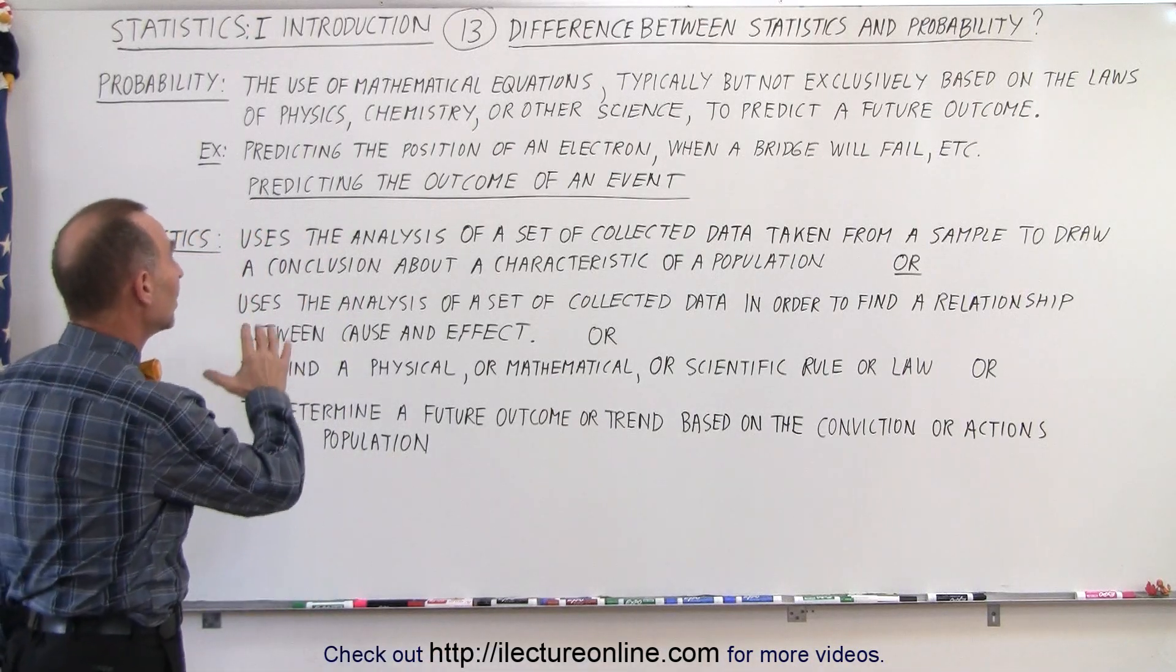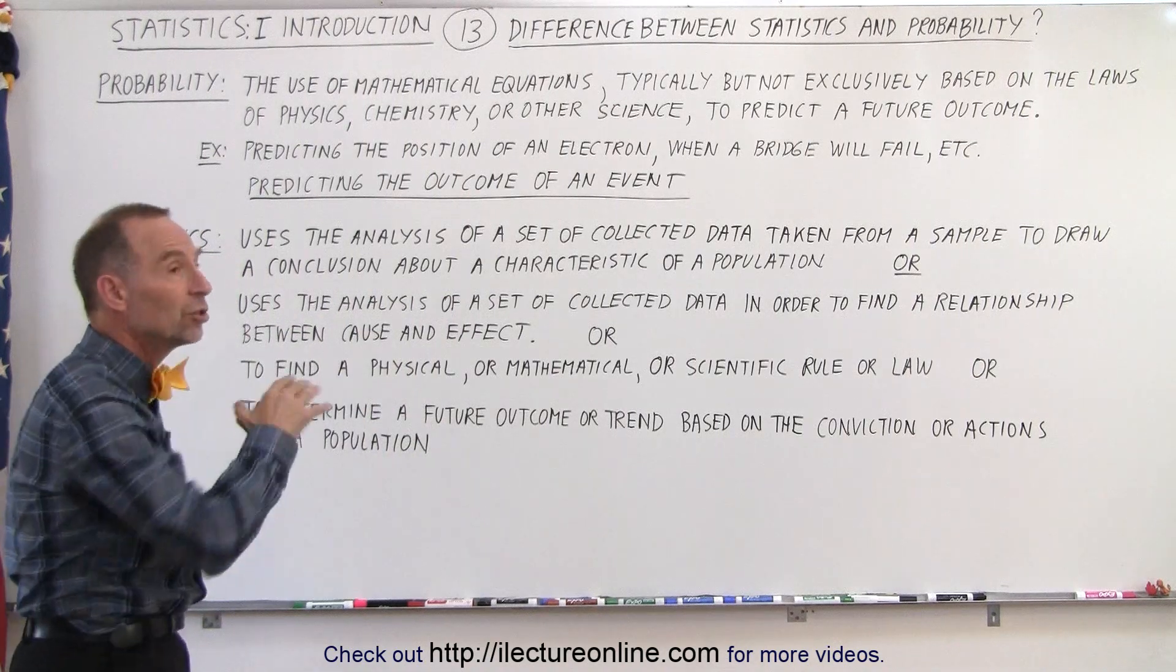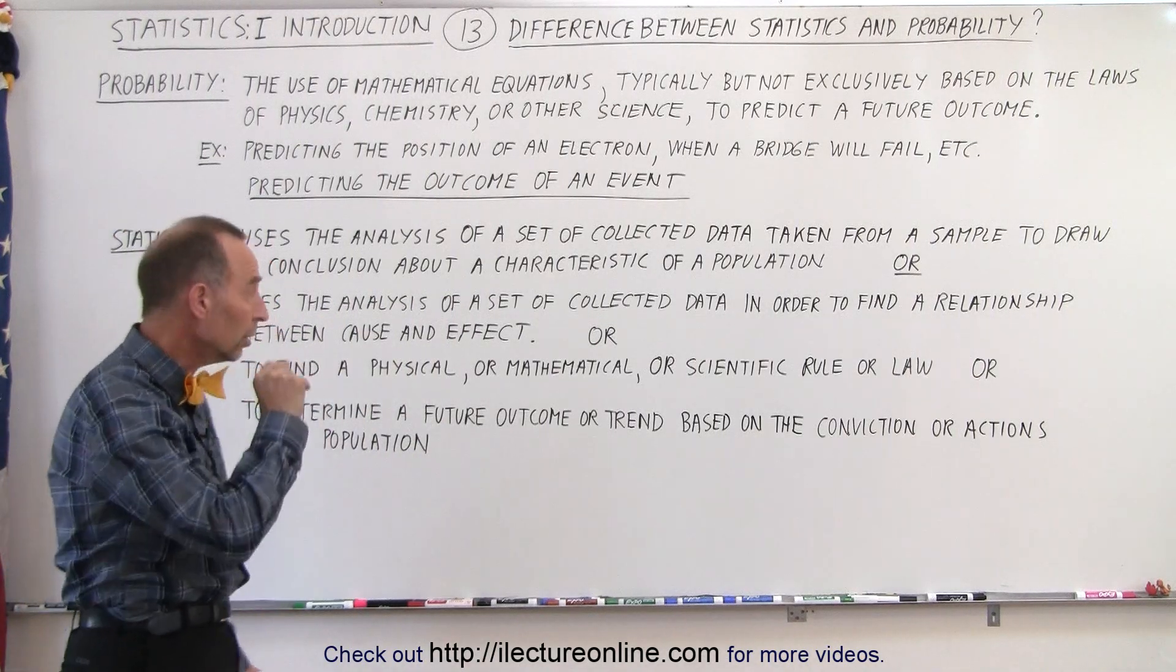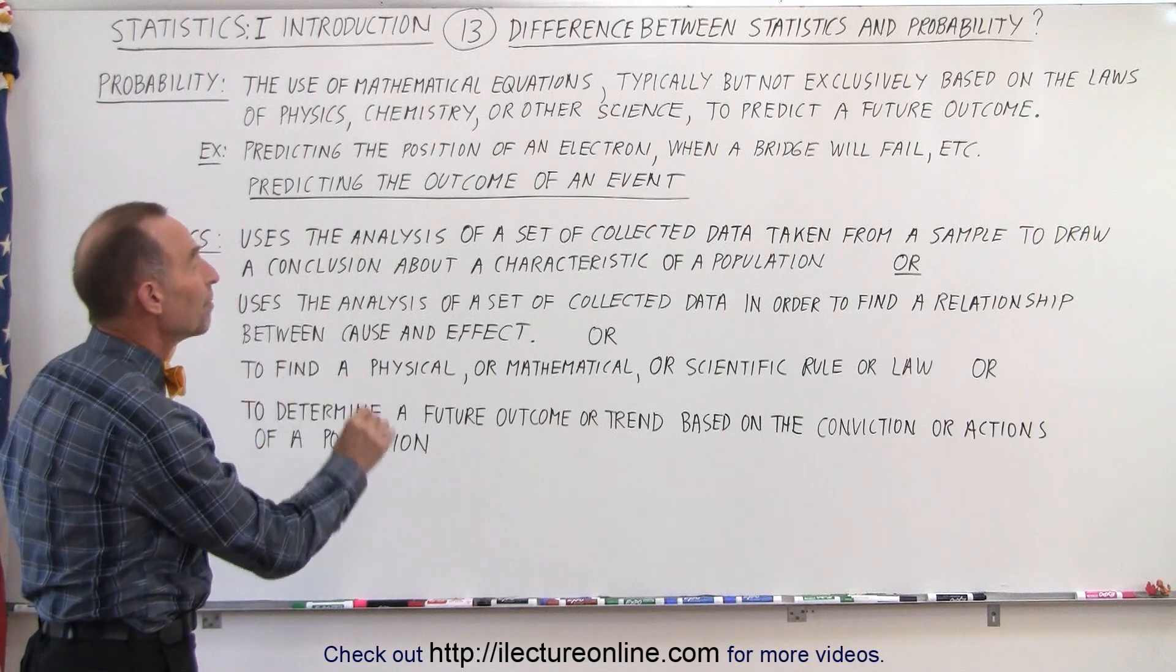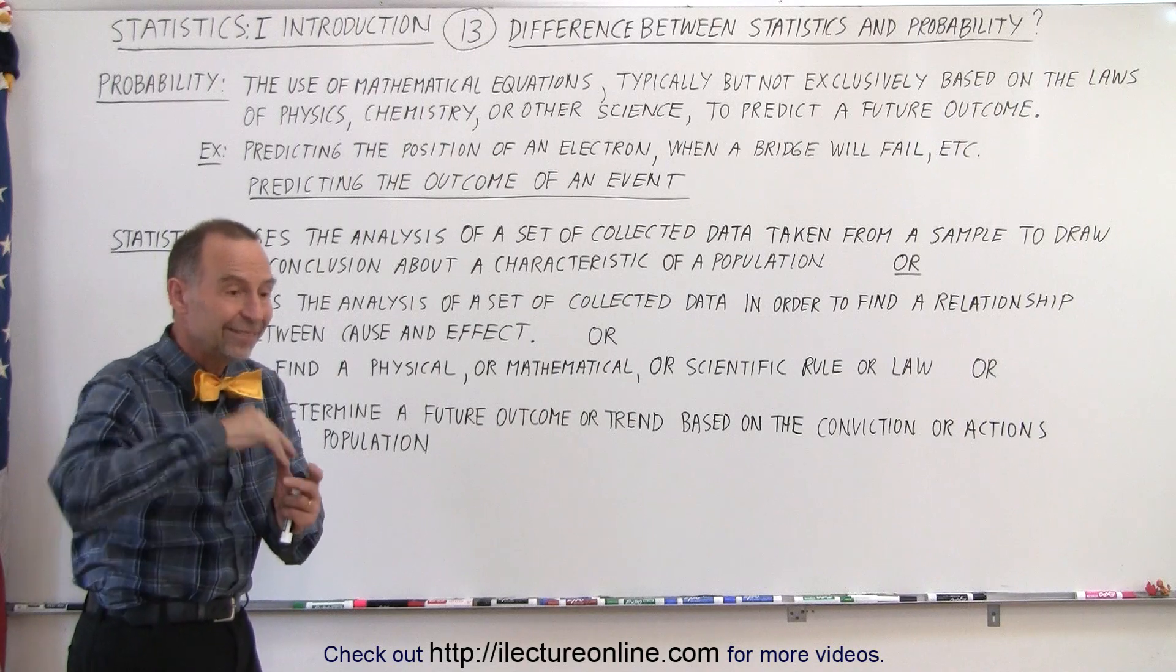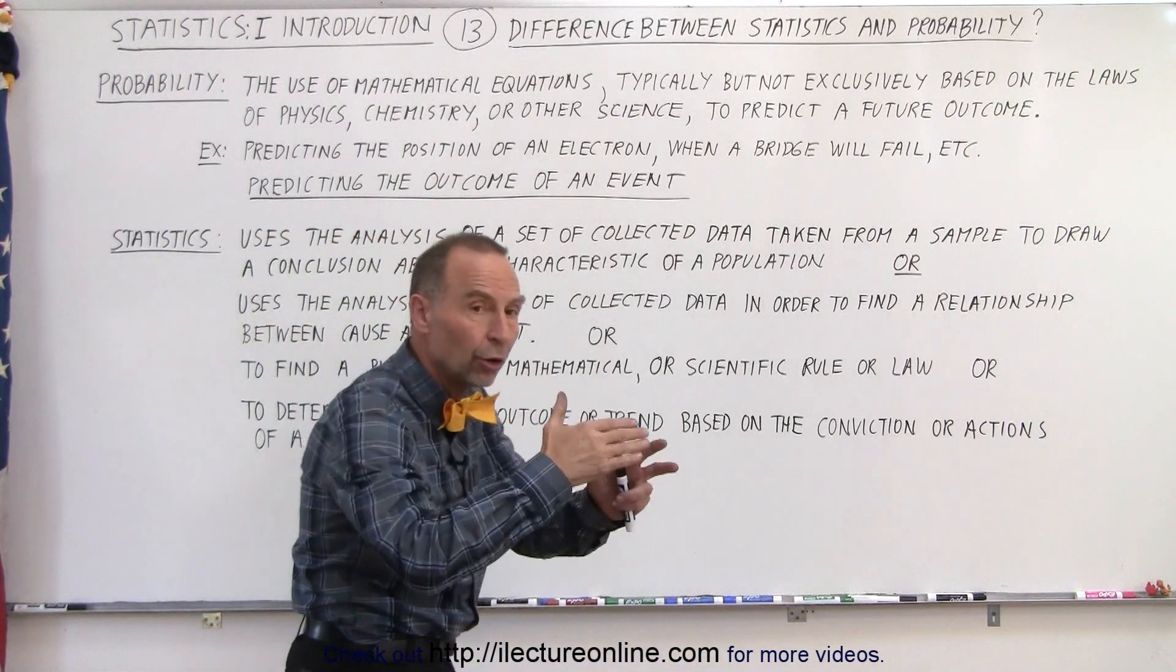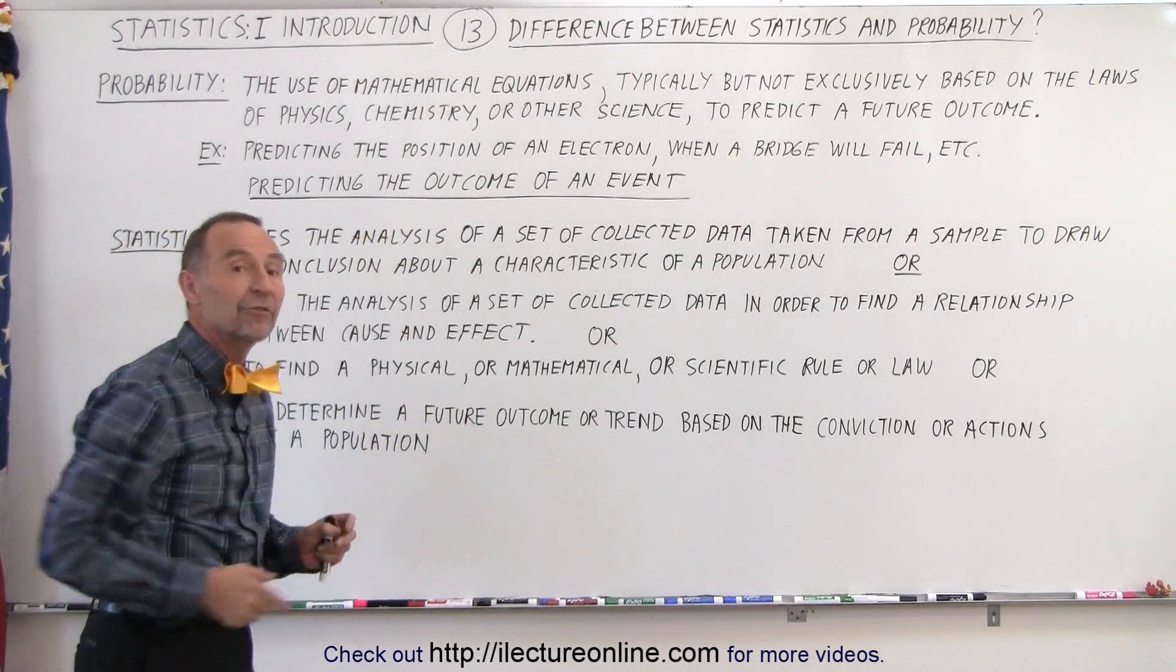Or we use the analysis of a set of collected data in order to find a relationship between cause and effect. Or we use it to find a physical or mathematical or scientific rule or law. Sometimes we use statistics to kind of infer a law. We don't use a law to infer a probability of an event occurring.